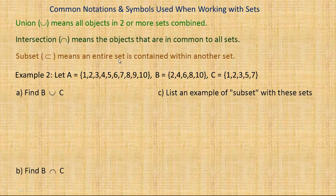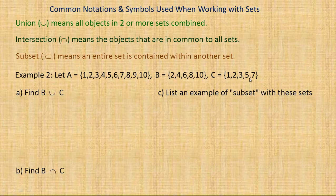I'll illustrate those with examples. Set A is the counting numbers from one to ten. Set B is the even numbers: two, four, six, eight, and ten. Set C is the numbers one, two, three, five, and seven — they're actually the prime numbers, but you don't need to know what a prime is for this example.